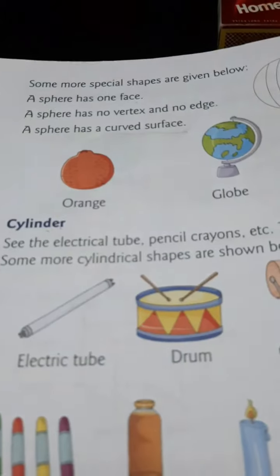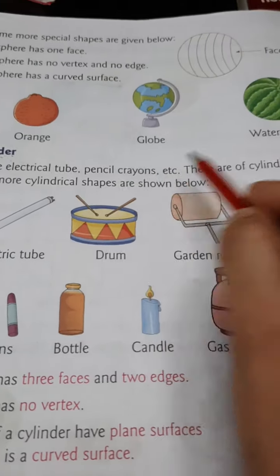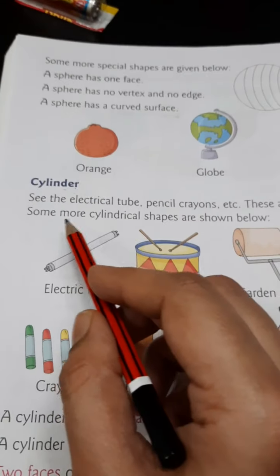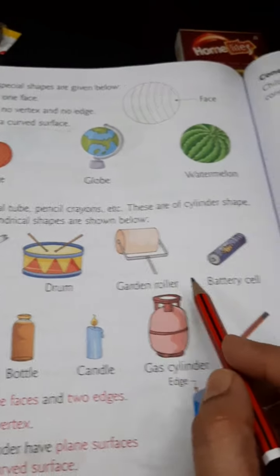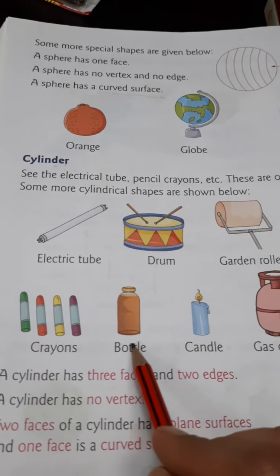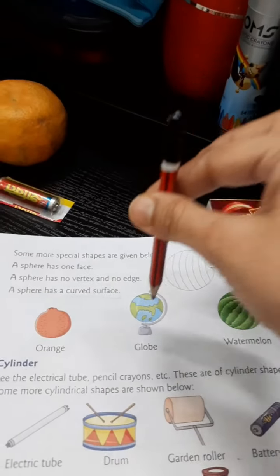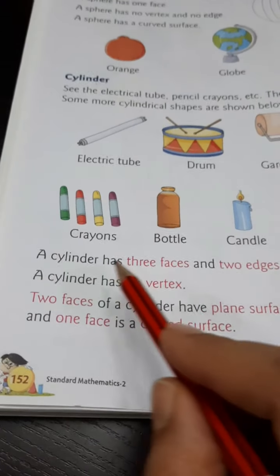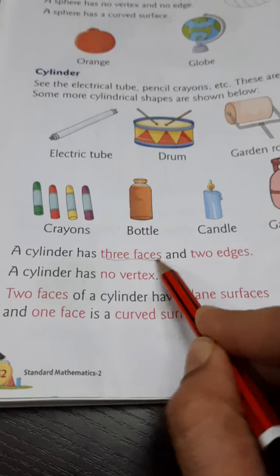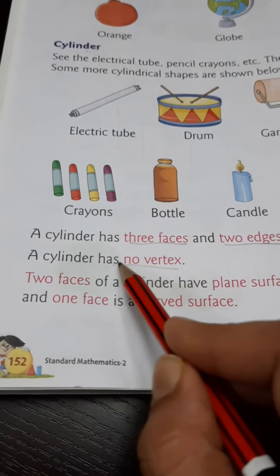Now let us come to cylinder. The electrical tube, pencil, crayons, drum, garden roller, battery cell, bottle, candle, and gas cylinder are all cylindrical in shape. The properties of a cylinder: it has three faces, two edges, and no vertex.